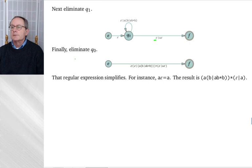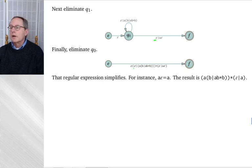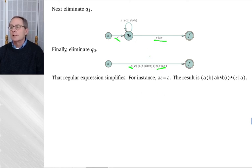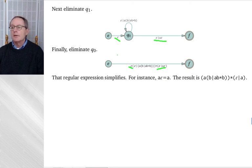Finally, eliminate Q0. To get from E to F: you take an epsilon transition followed by epsilon | A epsilon, or you can take epsilon, some number of loops, and then follow with epsilon | A epsilon. The result is a somewhat complicated regular expression with a star because you can go around that loop as many times as you like. This simplifies using the algebra of regular expressions — for example, A epsilon equals A.